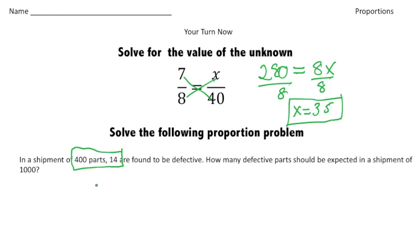So this right here is our first ratio. We know that 14 out of 400 don't work. So we could say 14 defective for every 400 total. So that's our ratio. And now we need to write the second ratio. The question is how many defective parts should be expected in a shipment of 1000? So that 1000 is going to be the total.